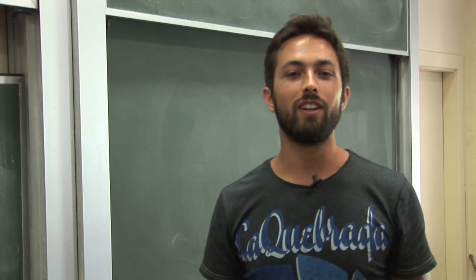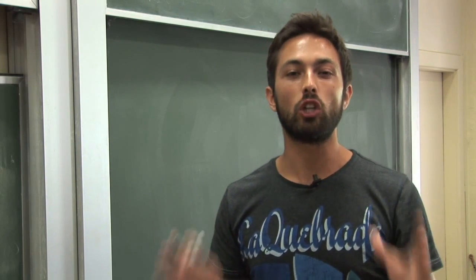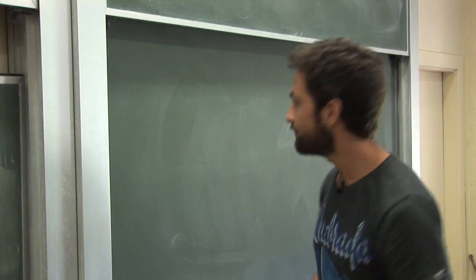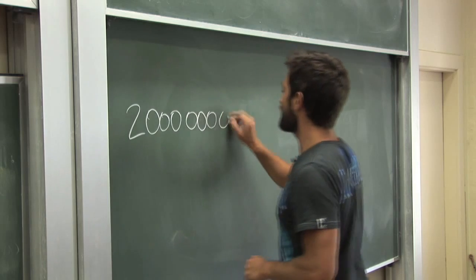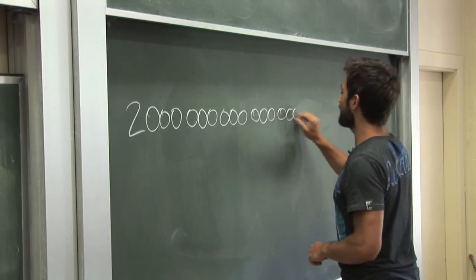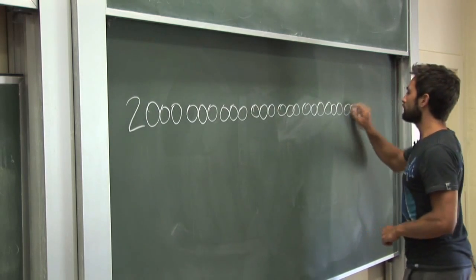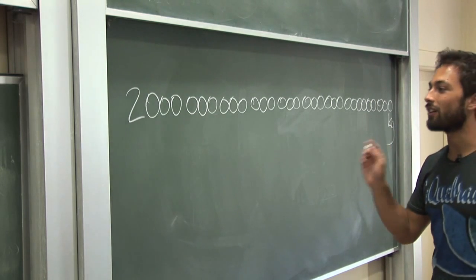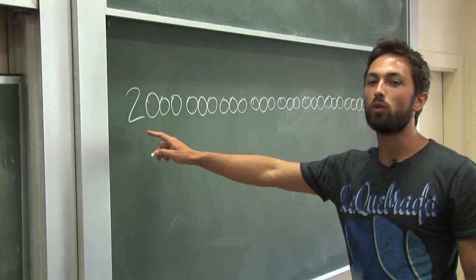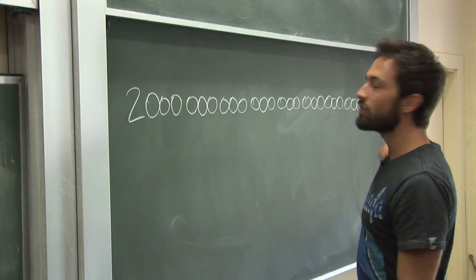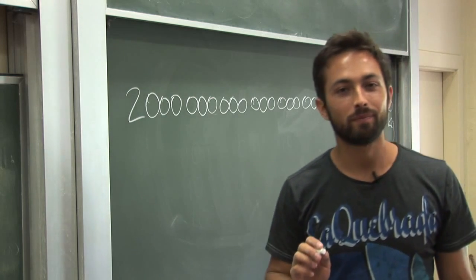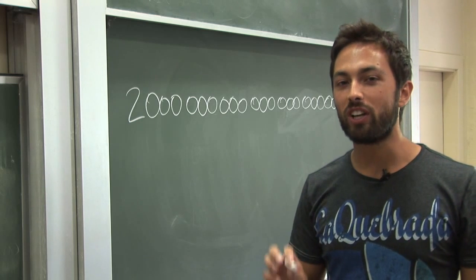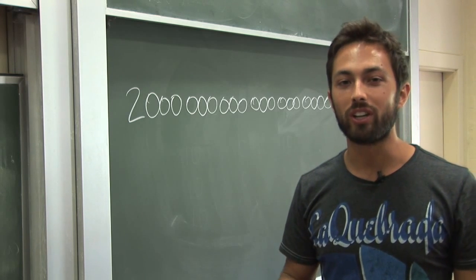In science, we often need to deal with some very large numbers. For example, the mass of the sun. That is the mass of the sun - a 2 followed by 30 zeros in units of kilograms. That is 2,000 billion billion billion kilograms.